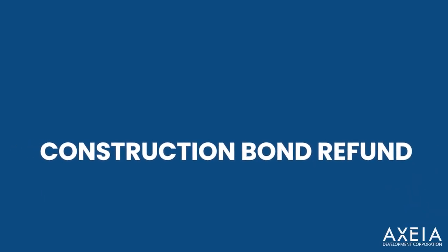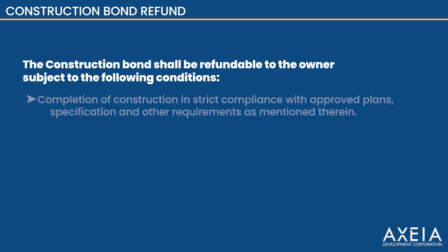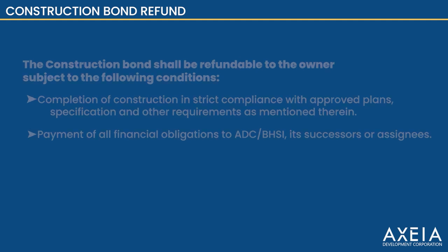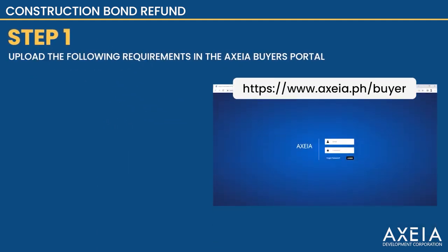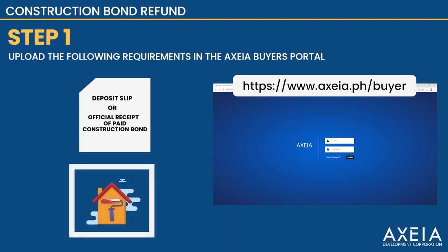Procedures and requirements for construction bond refund. The construction bond shall be refundable to the owner subject to the following conditions: completion of construction in strict compliance with approved plans, specifications and other requirements as mentioned therein, and payment of all financial obligations to Axia Development Corporation or Basic Housing Solutions, its successors or assignees. Step 1: Go to the Axia Buyer's Portal, attach the copy of deposit slip or official receipt of the paid construction bond, and a picture of the completed house improvement construction.